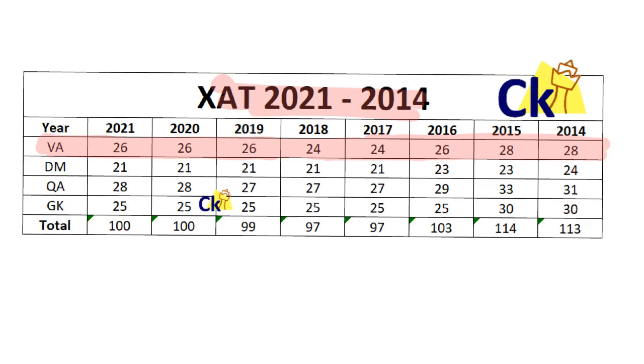In case there is a change in pattern, Zad will never tell you the new pattern — you will find it on the exam day. So let's assume 25 questions will be there on average every year.